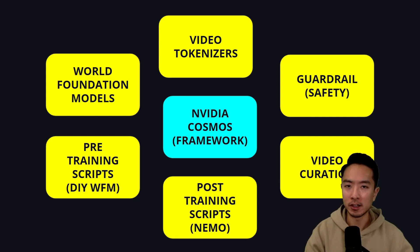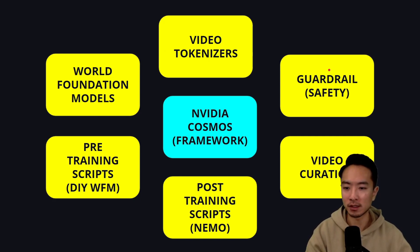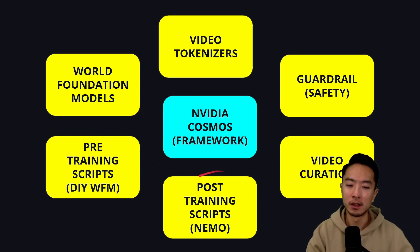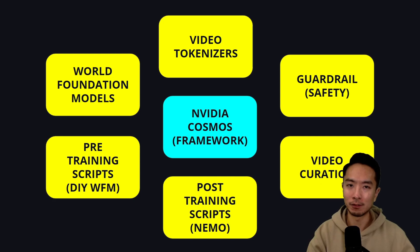So what exactly is Cosmos? NVIDIA calls their framework Cosmos — the thing that allows you to run World Foundation Models. In addition to the models themselves, there are other components: the video tokenizer, guardrail safety to ensure input prompts and output videos are safe, pre-training scripts for creating your own World Foundation Models, post-training scripts using the Nemo framework to train your custom world model, and video curation to select specific videos with filtering. All of these parts together are what NVIDIA calls Cosmos.